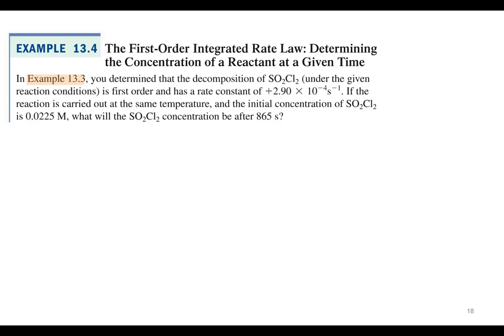Alright, so for this example we're going to use the integrated rate law. That would be the natural log of the concentration of whatever reactant you're looking at at time t. So in this case it's going to be SO2Cl2 at time t equals negative k, what was k again? Rate constant times t, time, plus the natural log of the concentration of whatever you're looking at initially. So we say the concentration at time equals zero or sub zero.